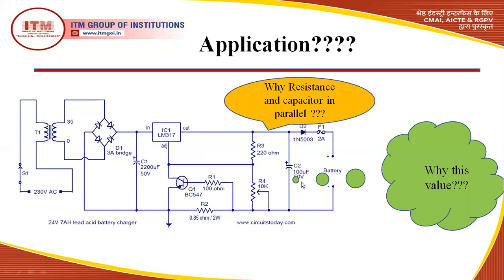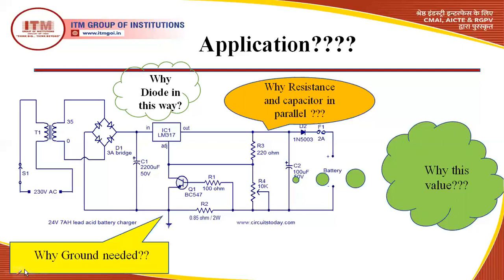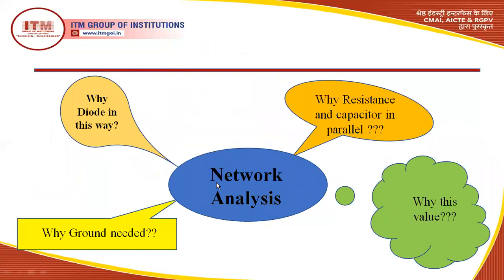Maybe the question is, why does the capacitor have this particular value, and why only this much capacitor value is added here — why not a different value? A third question may arise: why are these four diodes connected like this, and why not in a different way? And a fourth question may arise: why is a ground needed here? The answer to all these questions lies within a simple answer — that is the concept of network analysis.